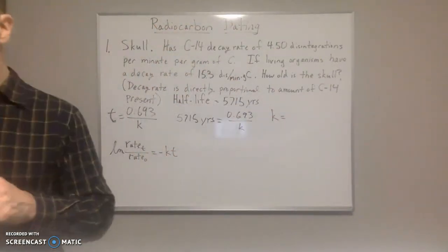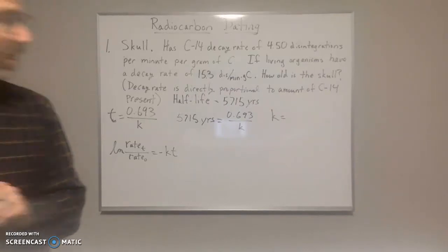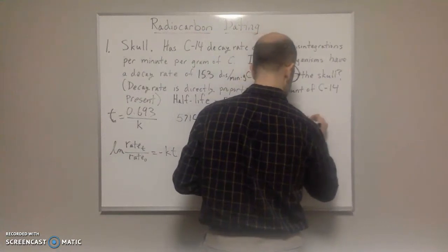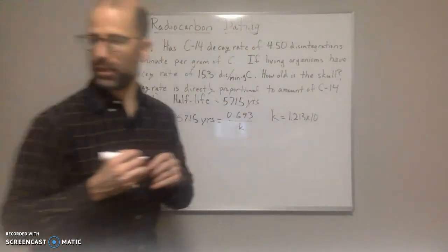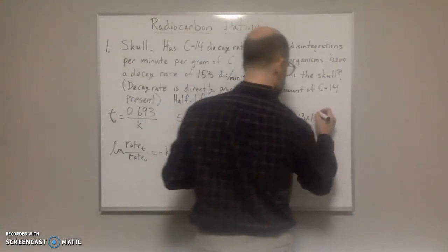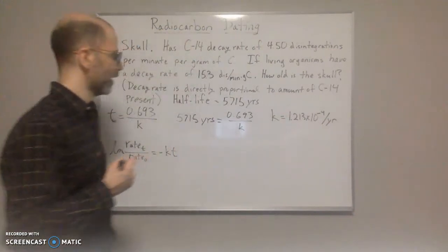We solve for k, then we get 1.213 times 10 to the negative 4 per year. So that's k.